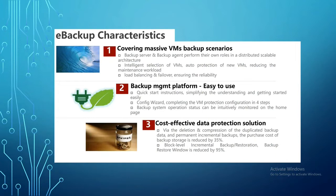E-Backup uses snapshot technology for backups — the same principle used by every backup software. When you trigger a backup policy, it sends commands to vCenter to take a snapshot of the VM. The snapshot creates a delta disk, redirecting writes so the backup software reads a read-only disk.